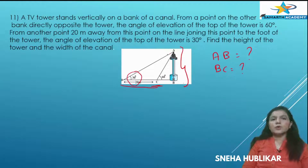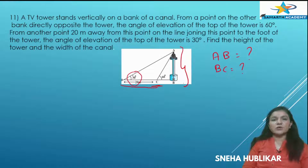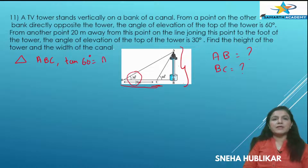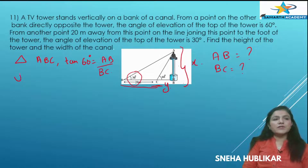When we have two triangles, whatever is common to both we try to equate. AB is common to both triangles, so let us equate AB. In triangle ABC, tan 60° equals AB by BC. Let AB be X and BC be Y. So root 3 equals X by Y, therefore X equals root 3 Y. Mark this as equation 1.